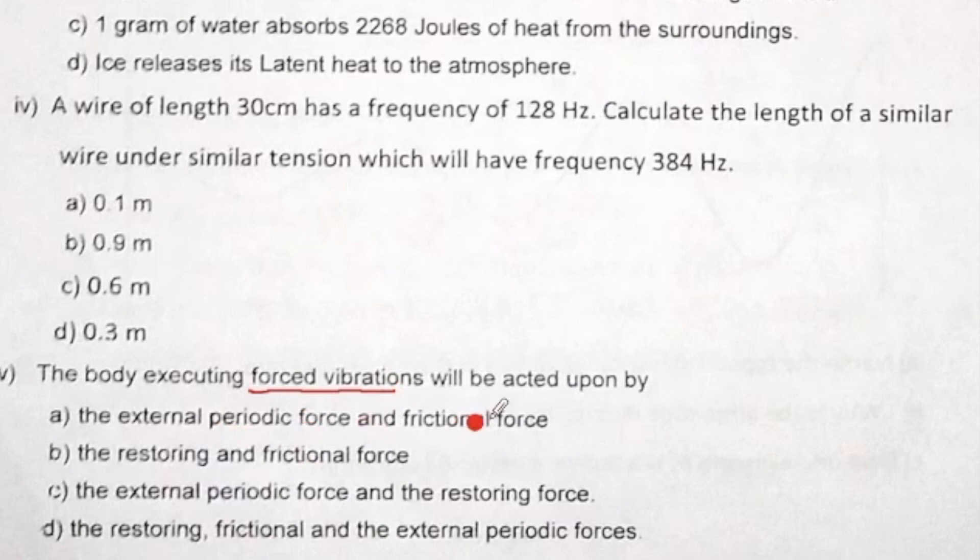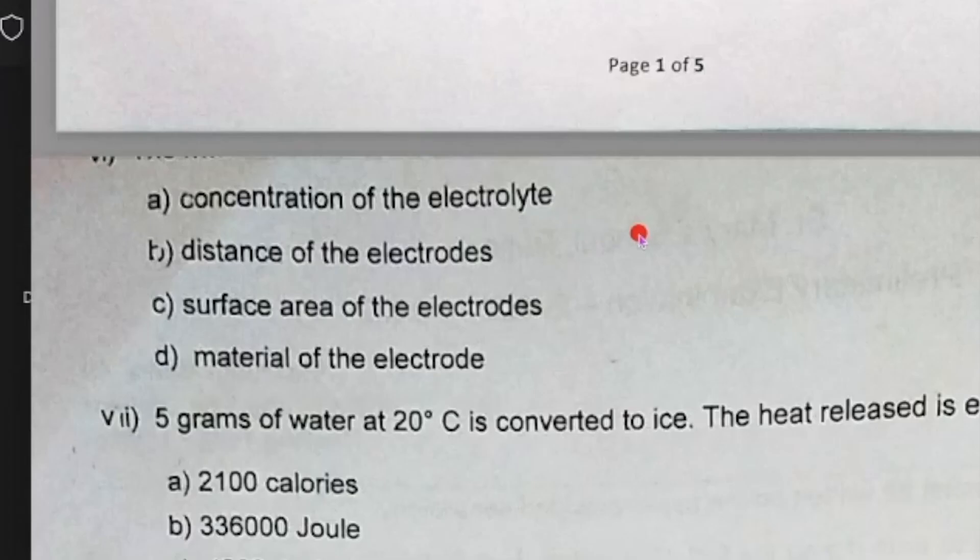Restoring and frictional, external periodic force and restoring force, and restoring frictional and external periodic force. So option is D - all will be there. The sixth subpart is missing. It is actually the internal resistance of a cell does not depend upon.